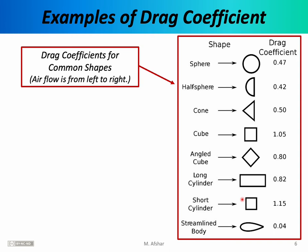This table lists the drag coefficient for some common shapes. You don't need to memorize these numbers, but given one, you need to know how to use it to calculate the reduced drag coefficient and the resistive force. In this table, the shapes are at rest and wind is blowing from left to right. According to the table, the drag coefficient for a sphere is 0.47, but for a blockier shape like a cube it is larger at 1.5, indicating the cube encounters roughly twice as much drag as the sphere at the same speed.